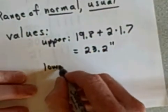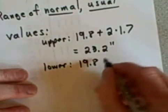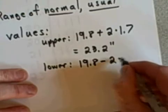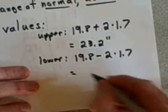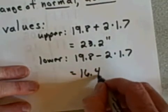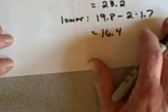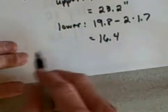The lower end of this range starts with my mean, 19.8, and then we simply subtract two times the standard deviation. This value, if you want to use a calculator and just figure it out, is 16.4.